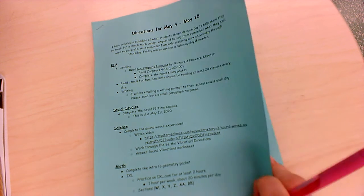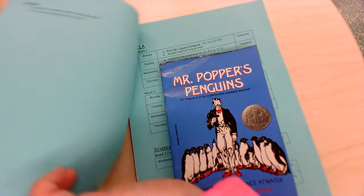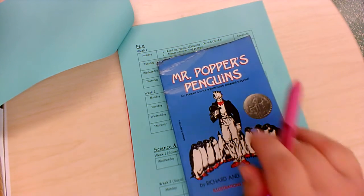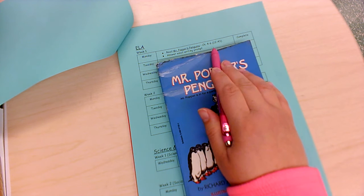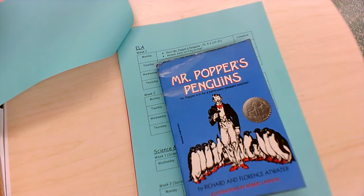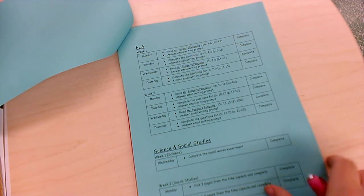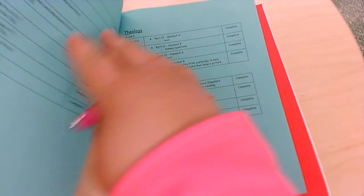For today in ELA, you need to read Mr. Popper's Penguins chapters 4 through 6, pages 22 through 43, and then answer the email writing prompt that I send you. We're not doing science or social studies today.